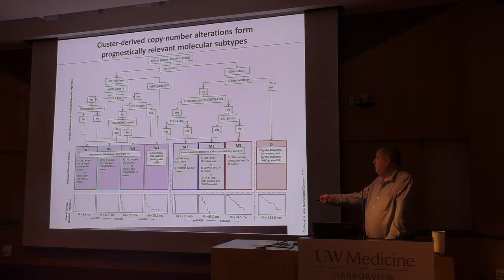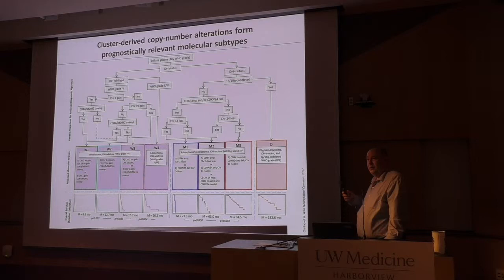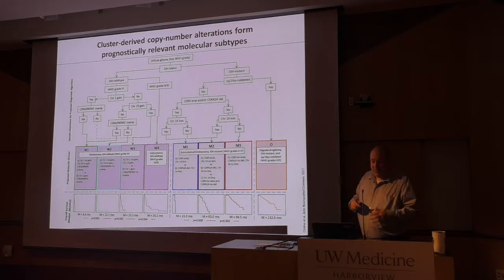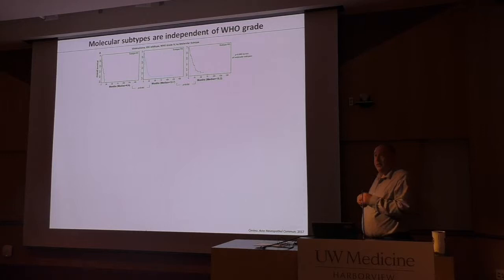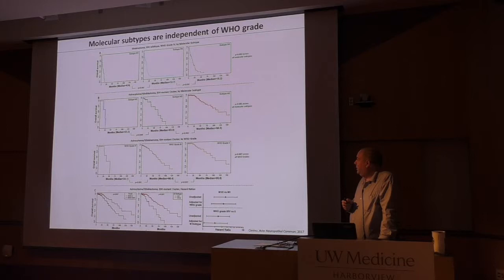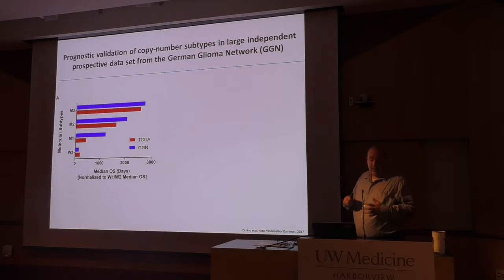Mapping across all entities, you get a nice risk stratification based on MDS-derived copy number classifications, from worst actor to best actor, with median survival increasing as you go. This is the first evidence beyond IDH that molecular status can help stratify patients — supporting the idea that diffuse gliomas should at least partially have a molecular grade rather than histological grade alone. These molecular copy number subtypes are independent of WHO grade.